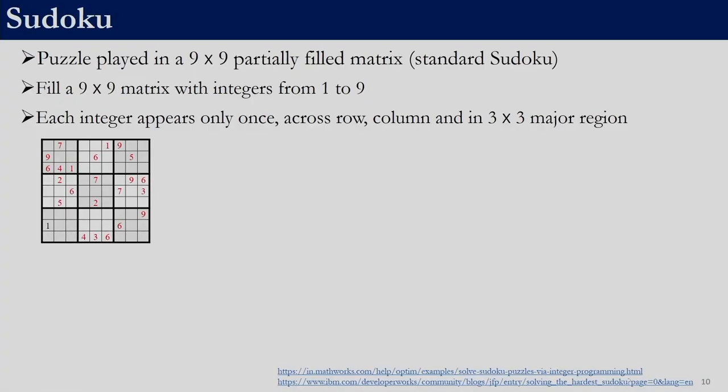Feasibility problems are a subset of optimization problems. If we solve an optimization problem, the solution we get will be feasible, but the reverse is not true — a feasibility solution need not be the best solution for an optimization problem. Another classical feasibility problem is the Sudoku problem. In the Sudoku problem we have 81 squares — 9 rows and 9 columns — and each cell is to be filled with integers from 1 to 9.